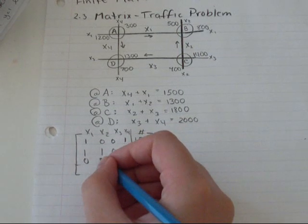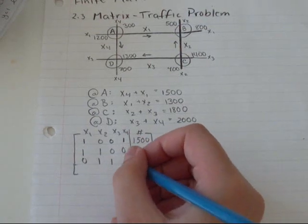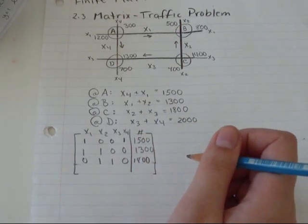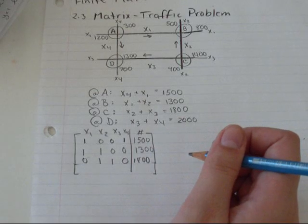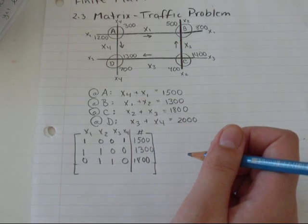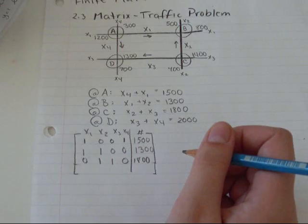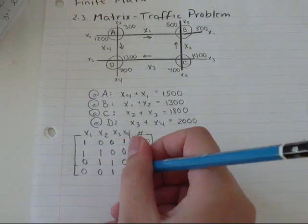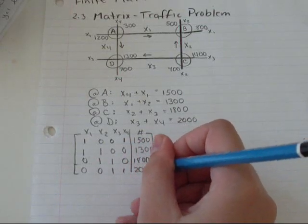but I have an X2, an X3, but I don't have an X4. And I have 1800 cars or horses, giraffes, anything doesn't matter. At D, I've got nothing there and then an X3, an X4 and 2000. Okay,